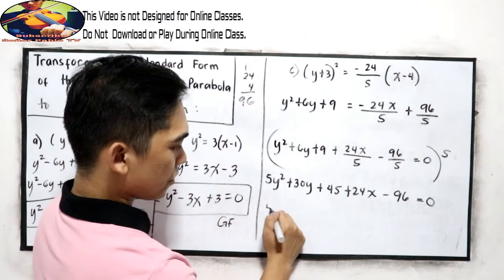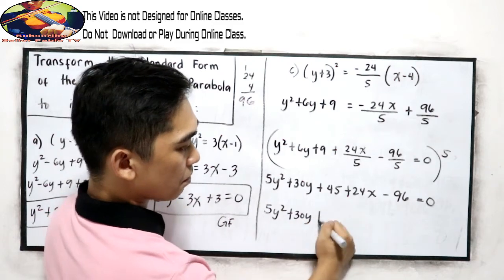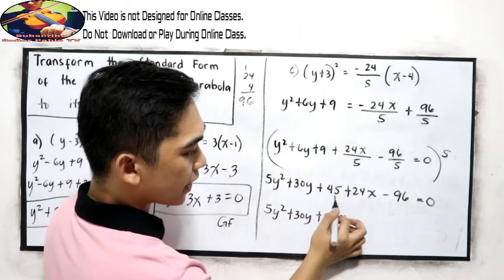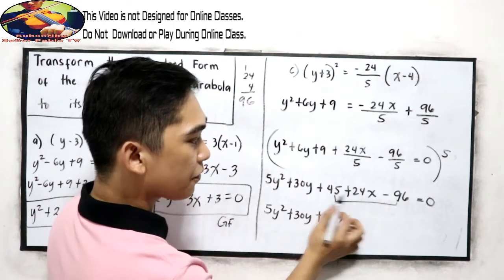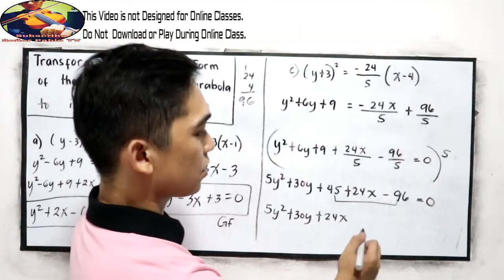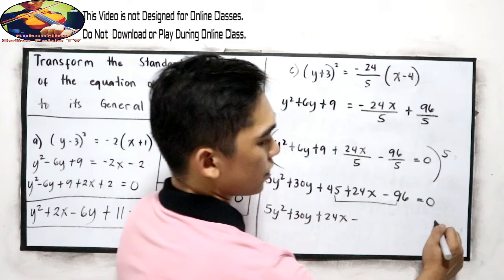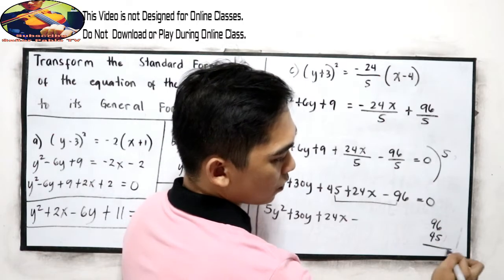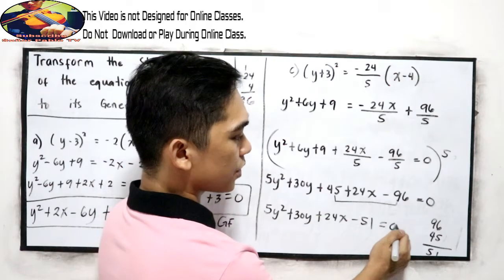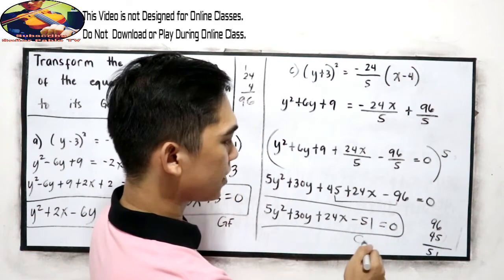Rearranging: 5y squared plus 30y plus 24x. Now combine the constants: 45 minus 96 is negative 51. So the general form is 5y squared plus 30y plus 24x minus 51 is equal to 0.